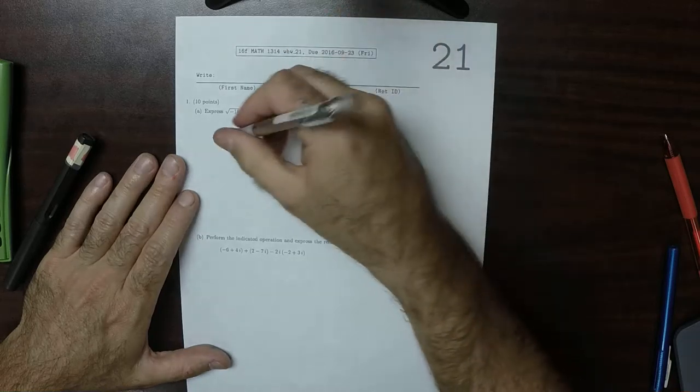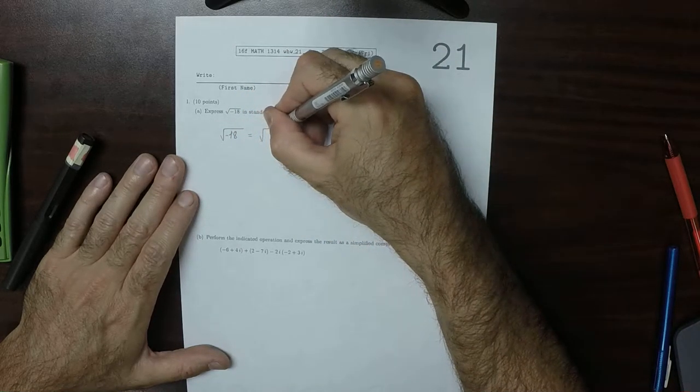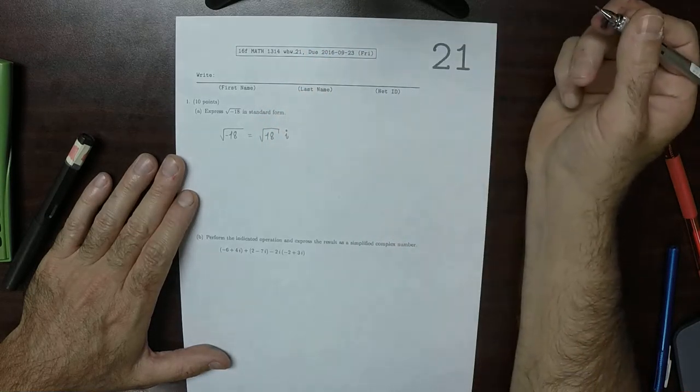square root negative 18, well, the negative can come out. So that would be square root of 18, and then it comes out of the square root as the imaginary unit i.